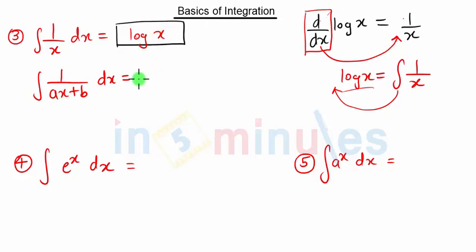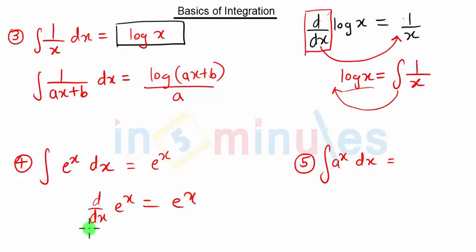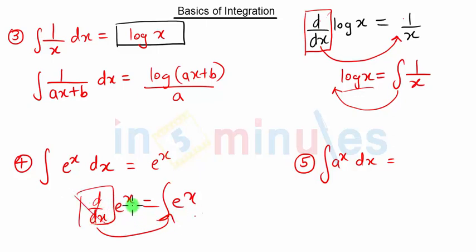Similarly, for log(ax + b), the result is divided by a. Now, the integration of e raised to x: the derivative of e raised to x is simply e raised to x. If this derivative goes to the other side it becomes integration, so the integration of e raised to x is just e raised to x.